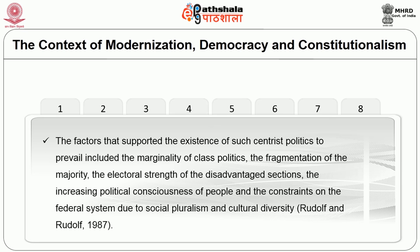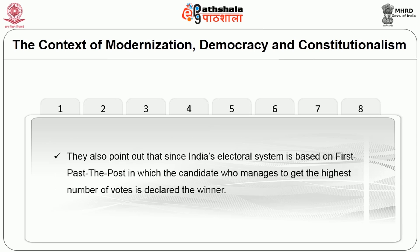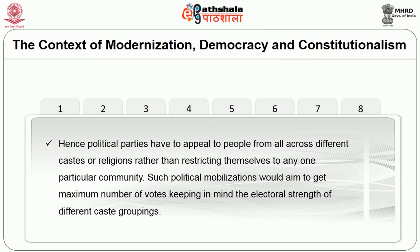The factors that supported the existence of such centrist politics included the marginality of class politics, the fragmentation of the majority, the electoral strength of the disadvantaged sections, the increasing political consciousness of people, and the constraints on the federal system due to social pluralism and cultural diversity. They also point out that since India's electoral system is based on first past the post, political parties have to appeal to people across different castes or religions rather than restrict themselves to any one particular community. Such political mobilizations would aim to get the maximum number of votes, keeping in mind the electoral strength of different caste groupings.